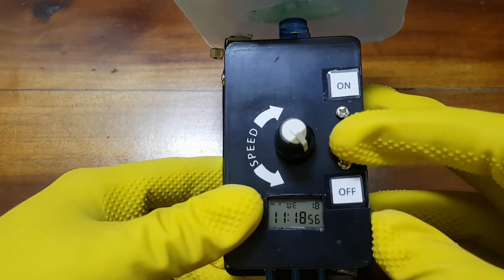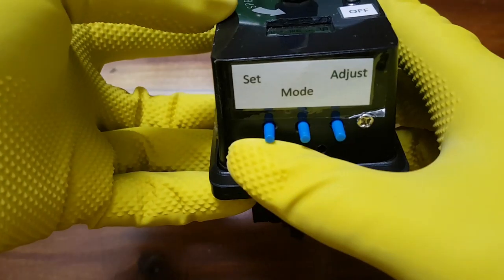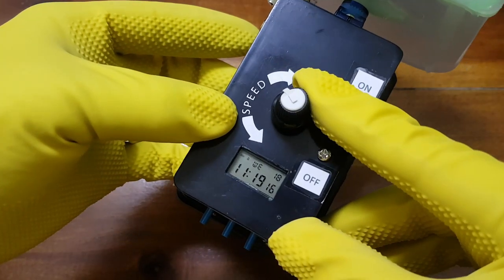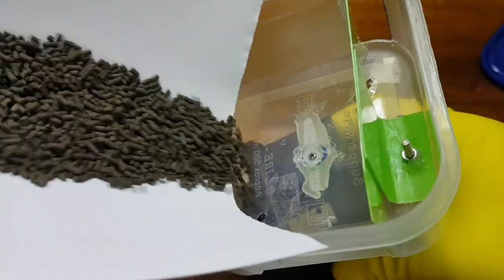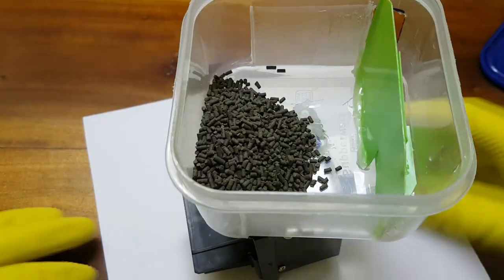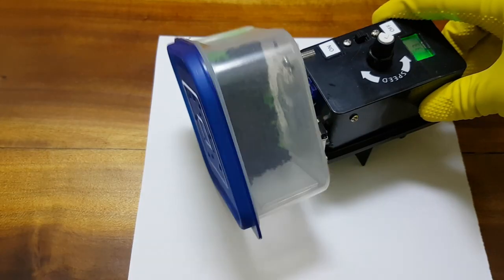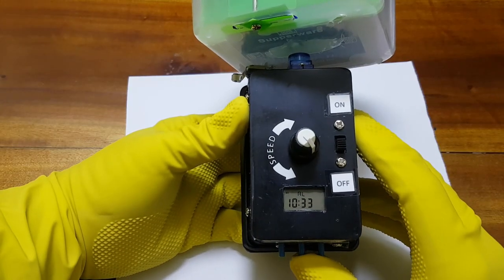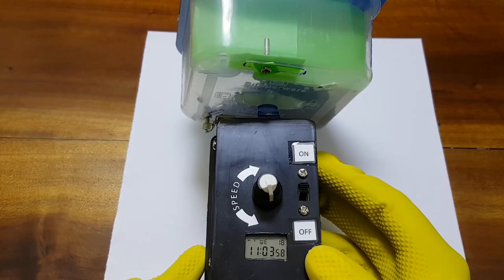I went ahead and labeled the on-off switch and the buttons which control the clock. Turning the potentiometer, we can adjust the speed at which the servo rotates. I added some fish food and turned the feeder on. Afterwards, I tested out the timer function as well. It works perfectly.